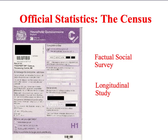In addition to primary data, it's important to be prepared for exam questions about secondary data — for example, the usefulness of official statistics in sociological research. The census is a major source of official statistics and also a good example of a factual social survey carried out using self-completion questionnaires. As the census has been carried out every ten years since 1801, with the exception of 1941 during World War II, it is effectively a longitudinal study of the entire population, enabling researchers to trace broad patterns of social change and make comparisons between different periods.